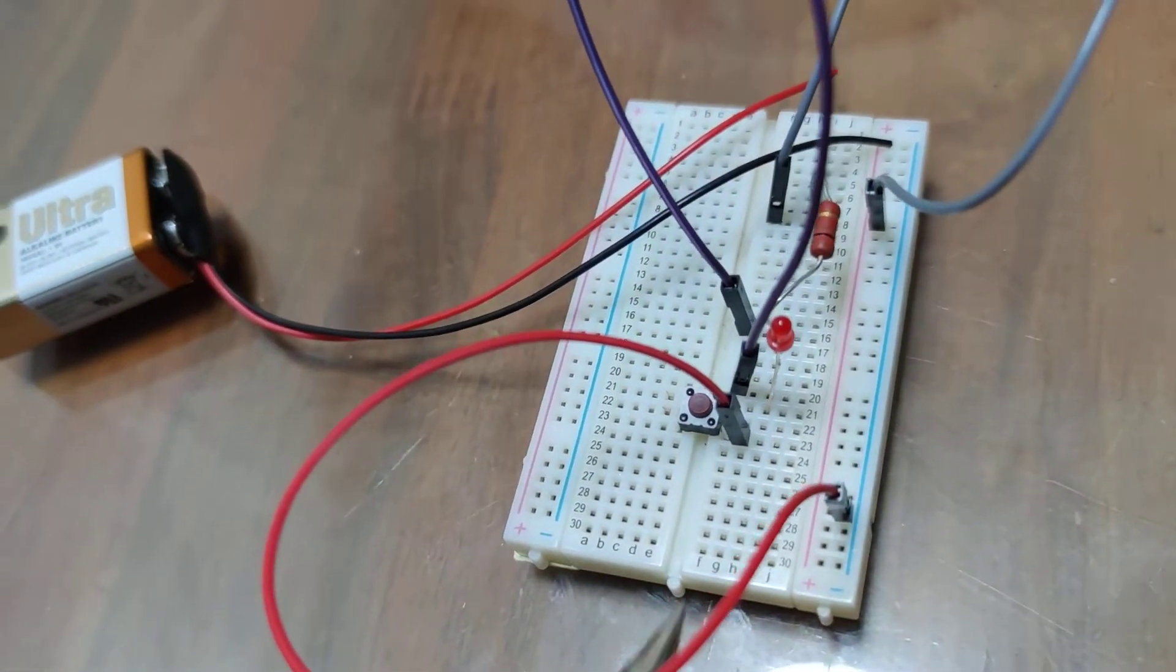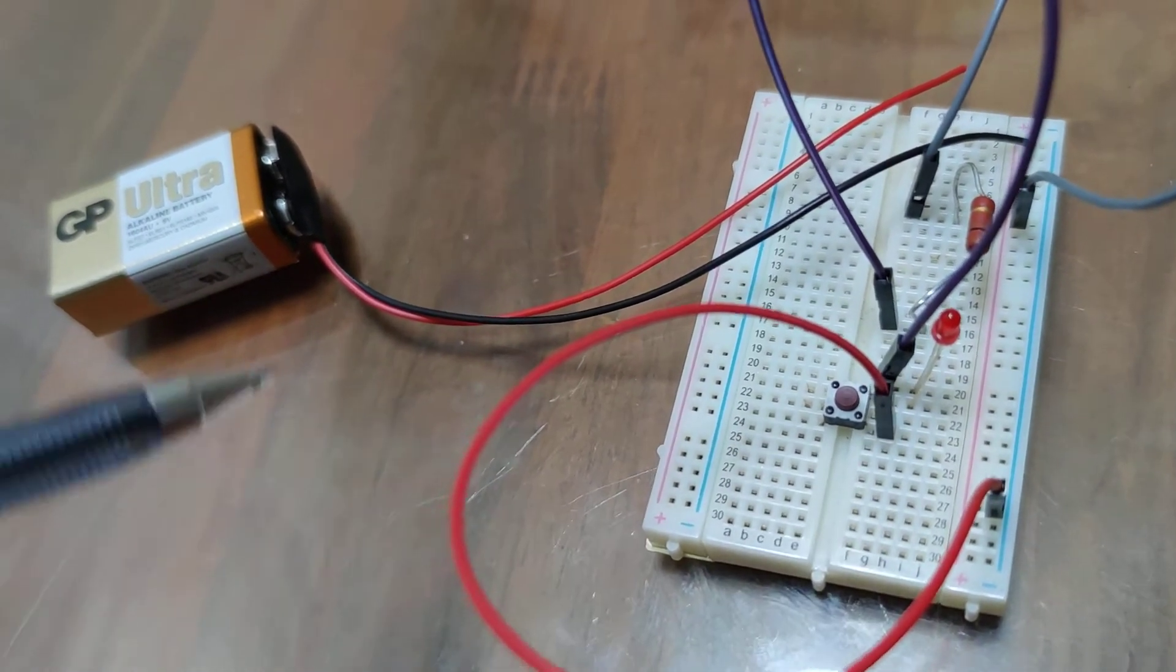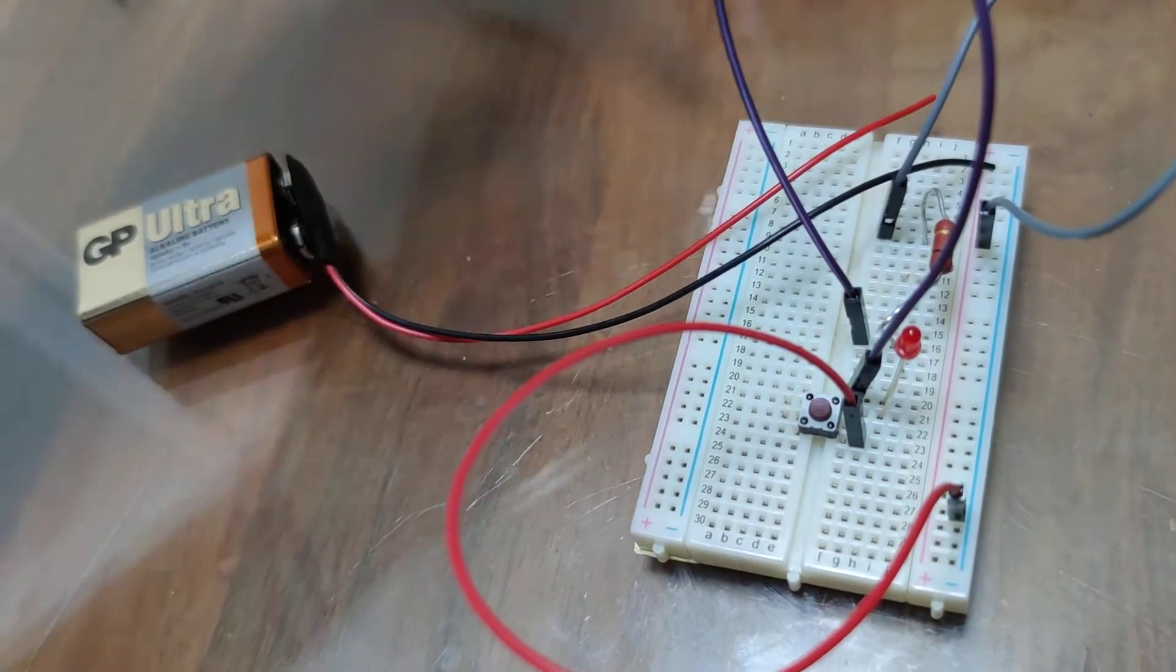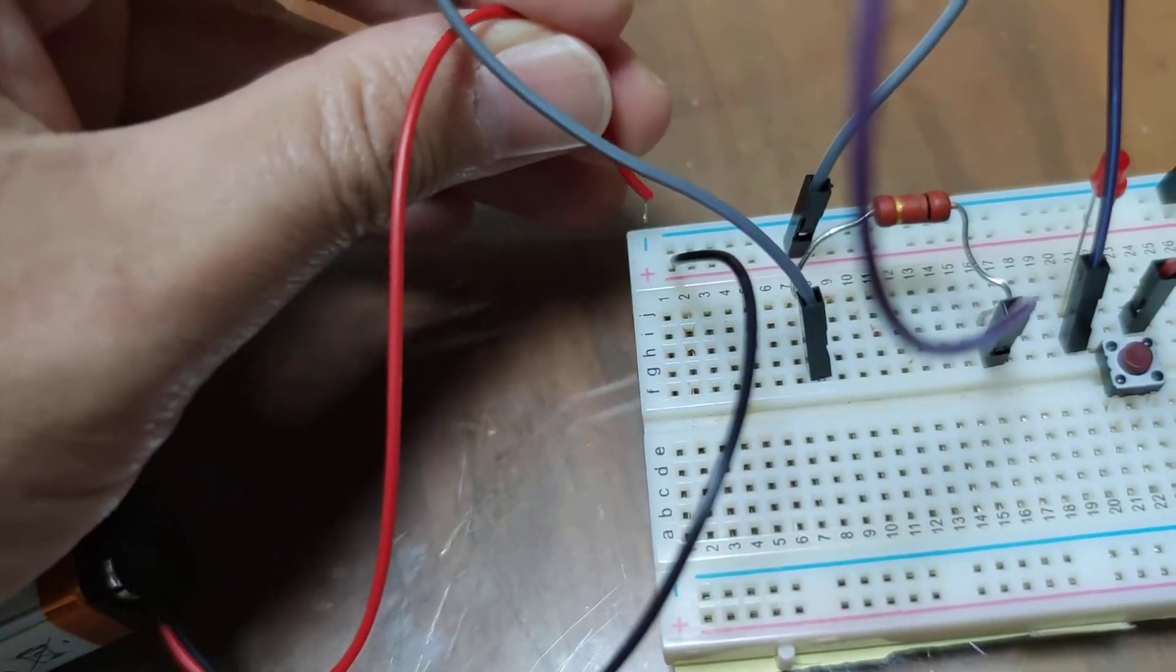And from there, it connects through the path in number 23, through the red wire, and then back to the battery, which is now disconnected.